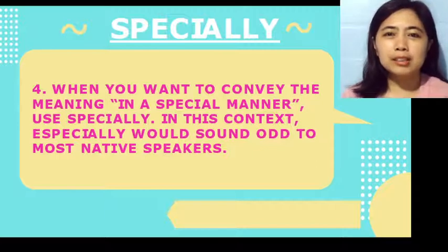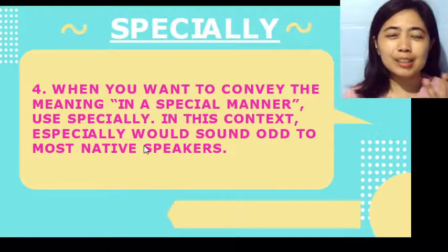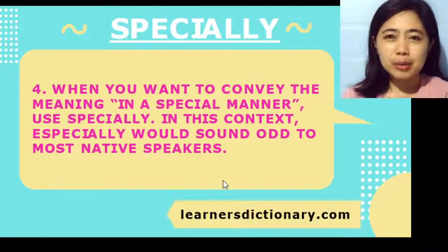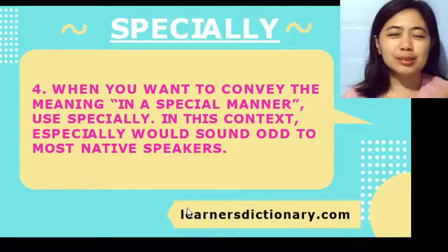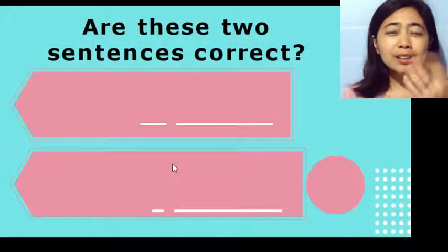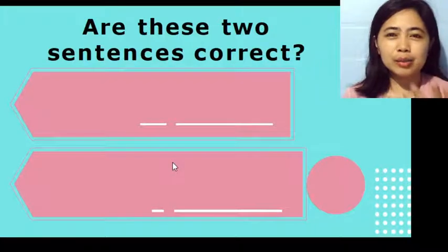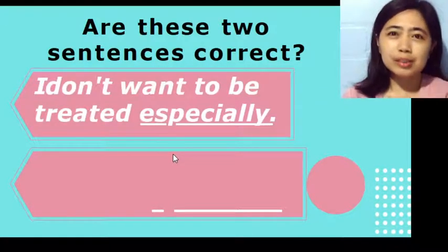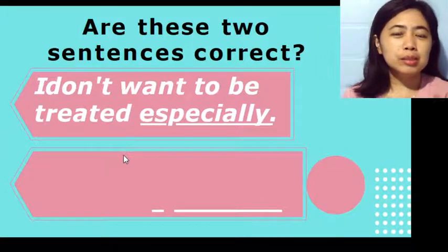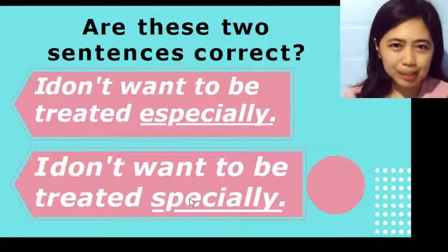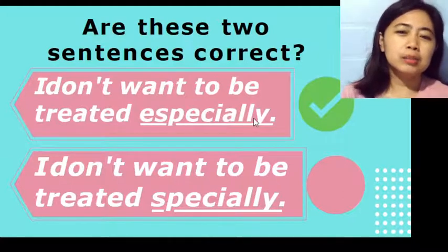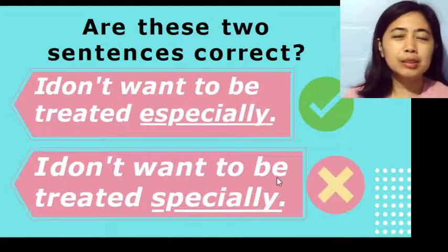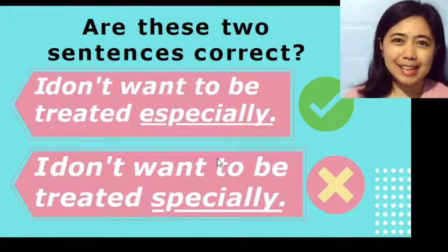Now let's go back to the two sentences from the start. By the way, this content is brought to you by Learners Dictionary dot com, for further research on the difference between the two. The correct answer is: 'I don't want to be treated specially.' That sentence using 'especially' is incorrect. The correct one is 'specially,' and the other is incorrect.